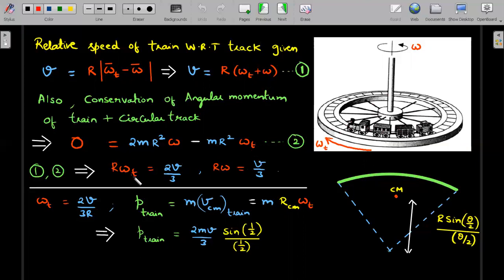we should be able to judge the value of R omega T, which is the absolute speed of the train, which is 2V by 3, and R omega, which is the absolute speed of the track on which the train is running is V by 3. That's why the relative velocity comes out to be V. Then the value of angular velocity of the train with respect to this track would be 2V divided by R. Can you see that here?